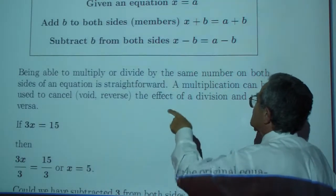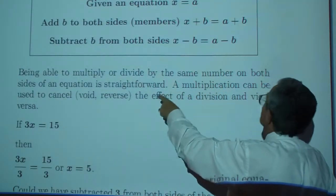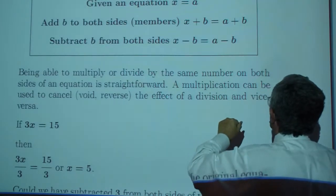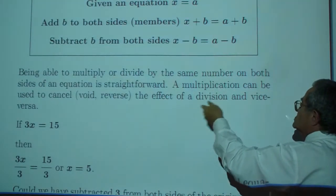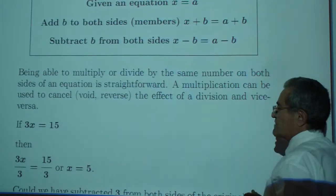Now, being able to multiply or divide by the same number on both sides of an equation is straightforward. Multiplication can be used to cancel, to avoid, to reverse the effect of division, and vice versa.